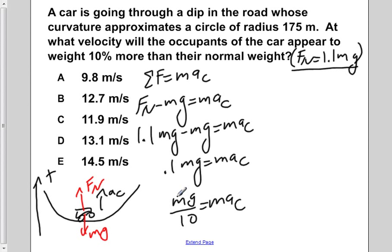Now, if we divide both sides by m, we would be left with a centripetal is equal to g over 10.